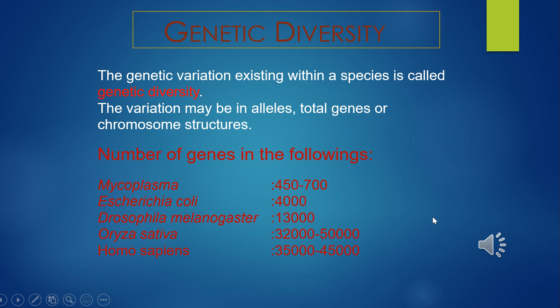First we will study genetic biodiversity. It is the diversity in number and types of genes as well as chromosomes present in different species, and the variations in genes and their alleles within the same species. On average, a bacteriophage has 100 genes, Mycoplasma has 450 to 700 genes, E. coli has 4,000 genes, Saccharomyces cerevisiae (baker's or brewer's yeast) has 6,000 genes, Drosophila melanogaster (fruit fly) has 30,000 genes, Oryza sativa has 32,000 to 50,000 genes, and Homo sapiens has approximately 30,000 to 45,000 genes.